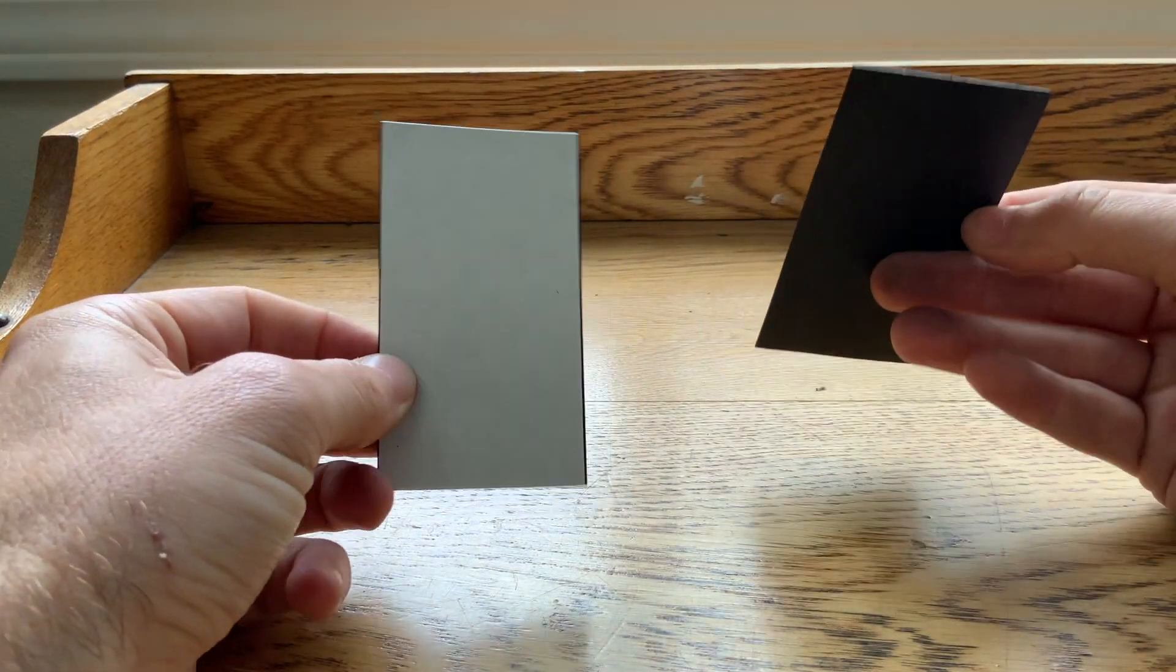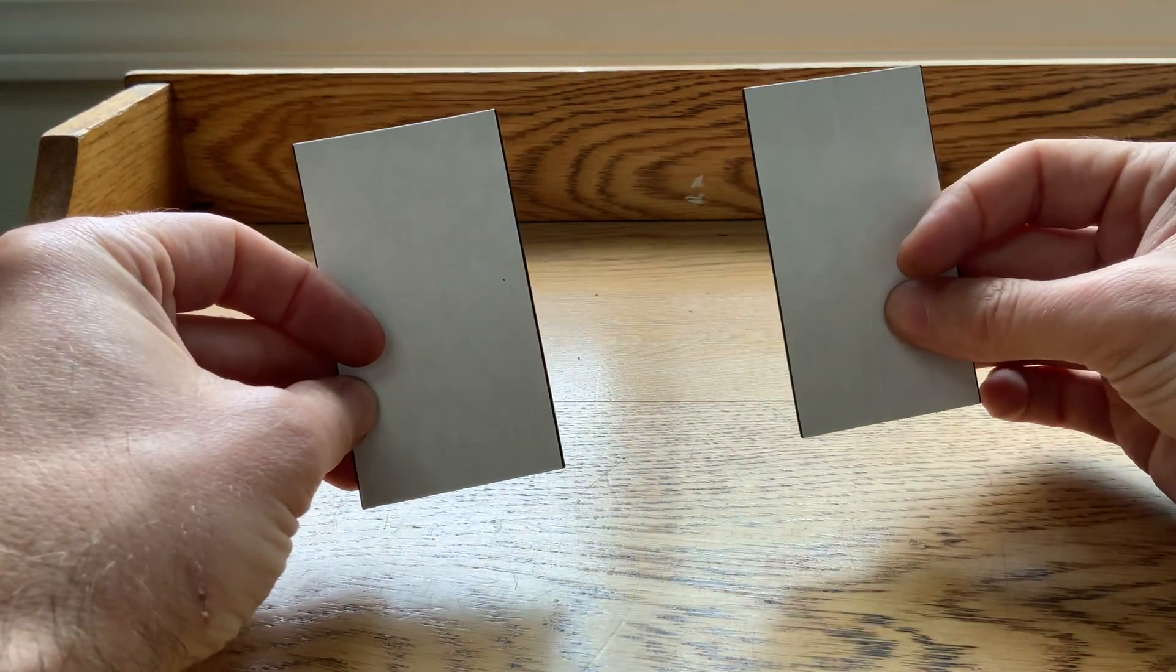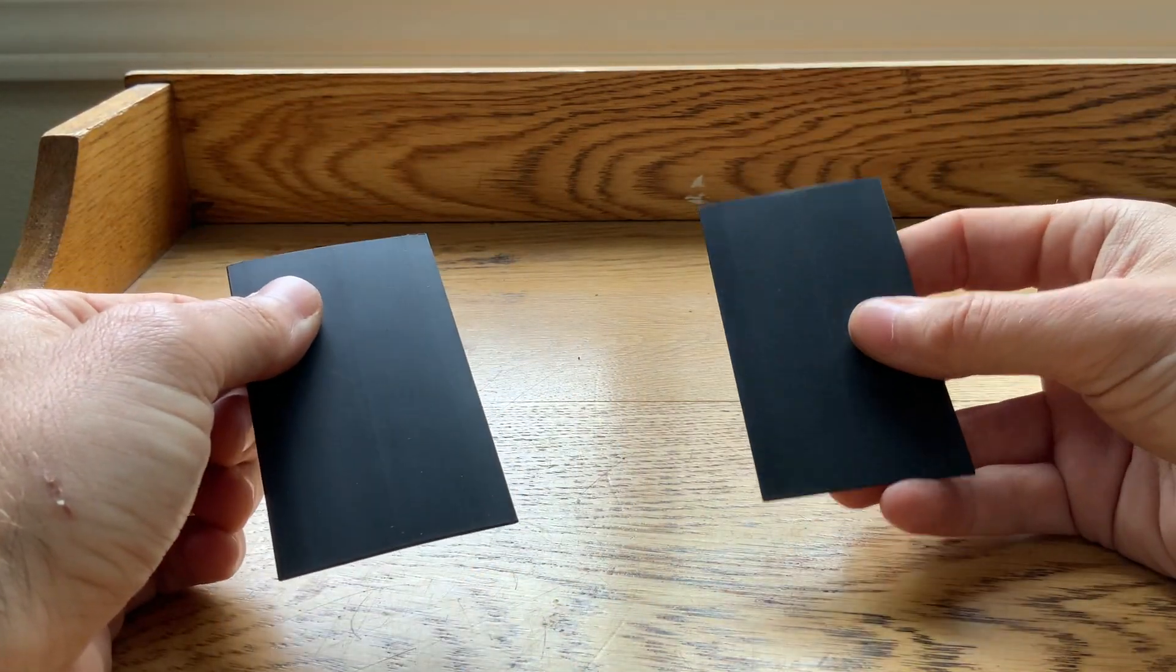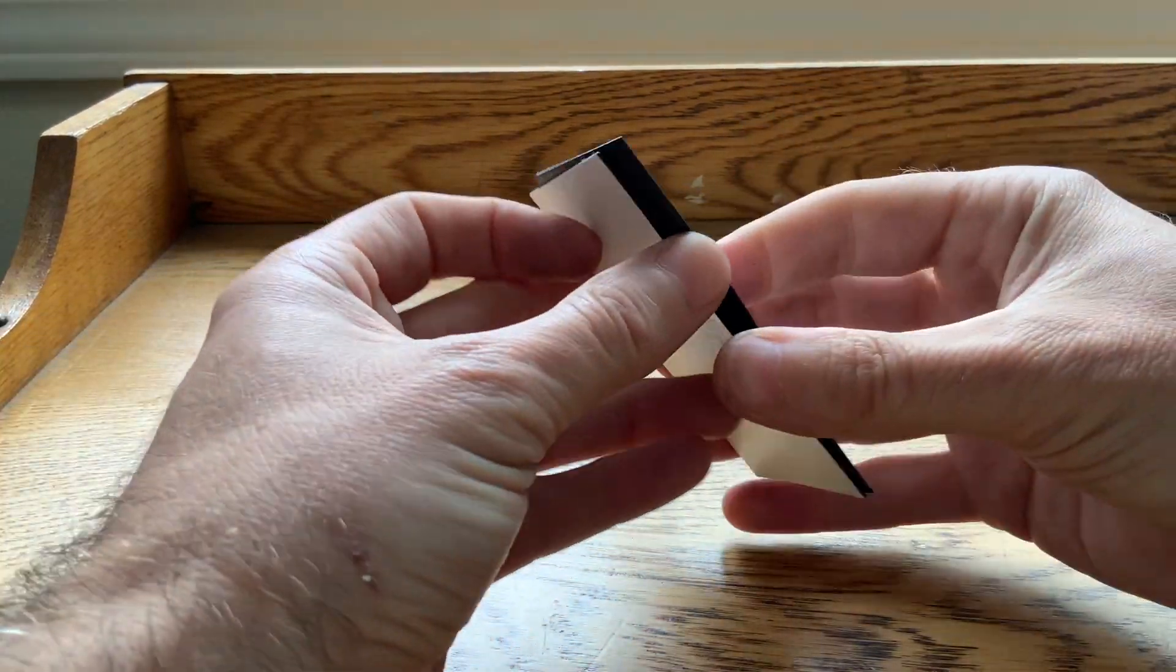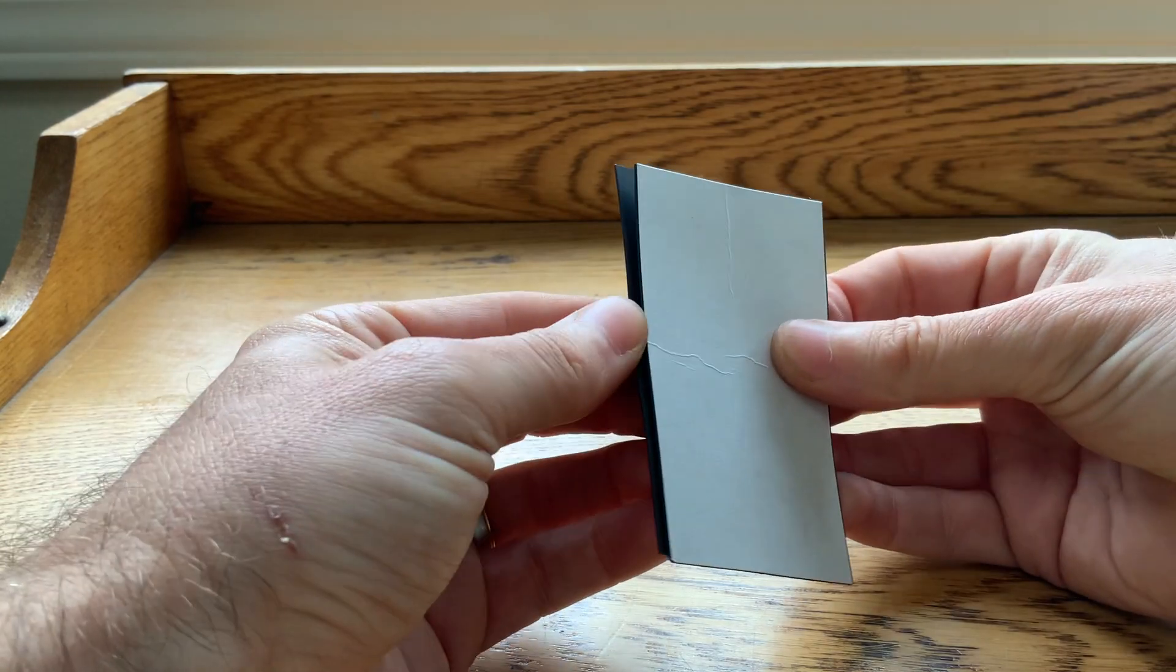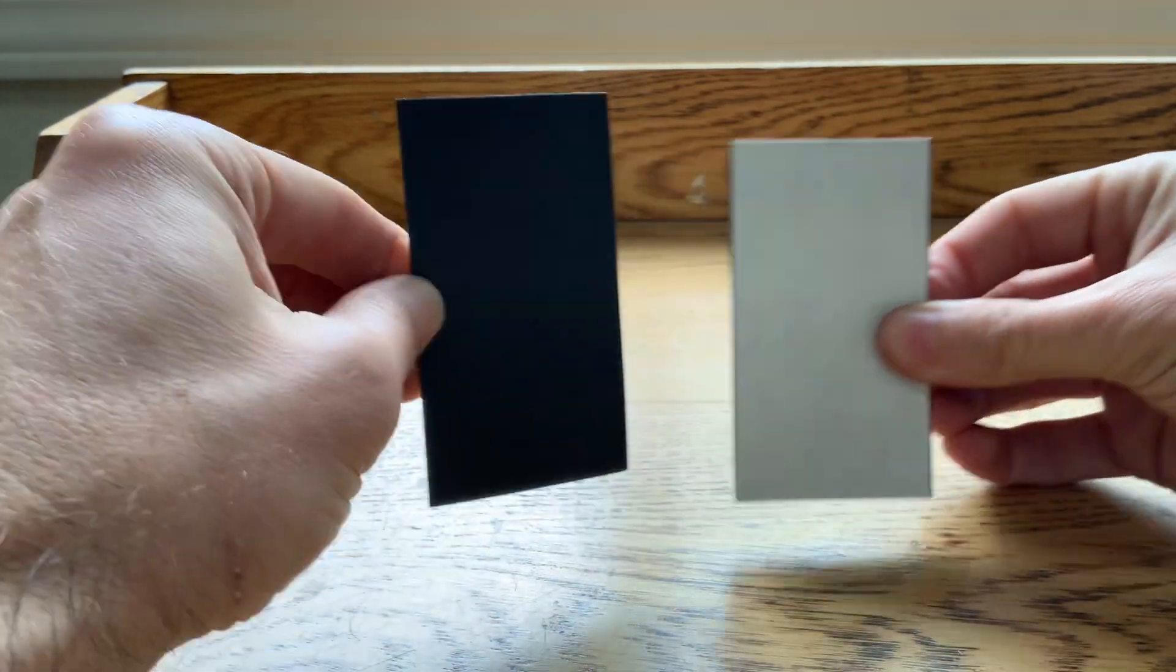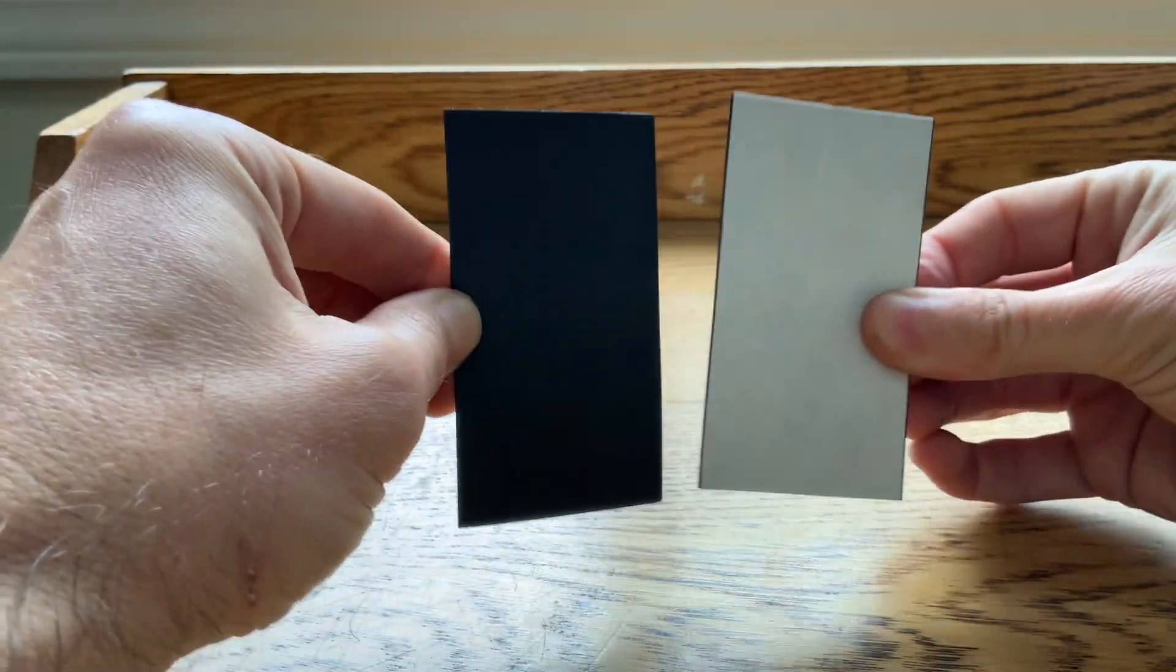So if you have two of these things, they both have these black sides that you stick against the fridge. If you stick them together and try to pull them apart in a certain direction, do you hear that? They kind of vibrate.